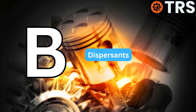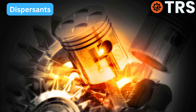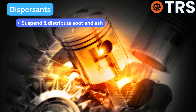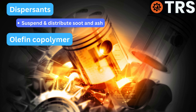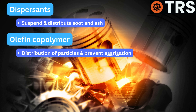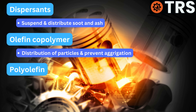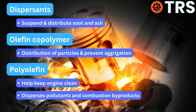B: Dispersants. Dispersants operate to suspend and distribute dangerous combustion byproducts, such as soot and ash, to stop them from creating deposits in the engine. Olefin copolymer is one of many known dispersants used to maintain equal distribution of particles in the oil and to prevent their aggregation, keeping them from building up in sensitive regions of the engine. Polyolefin dispersants are another group that are helpful in keeping an engine clean by effectively dispersing a variety of pollutants and combustion byproducts.